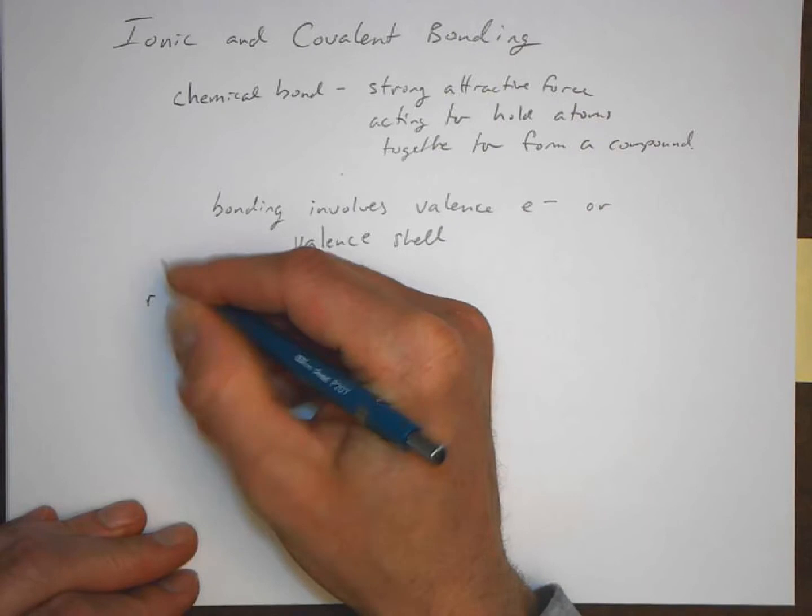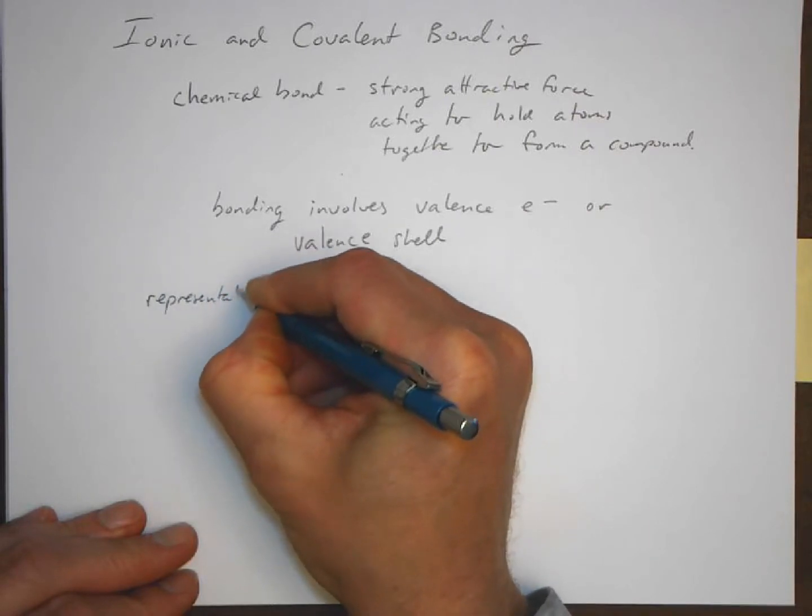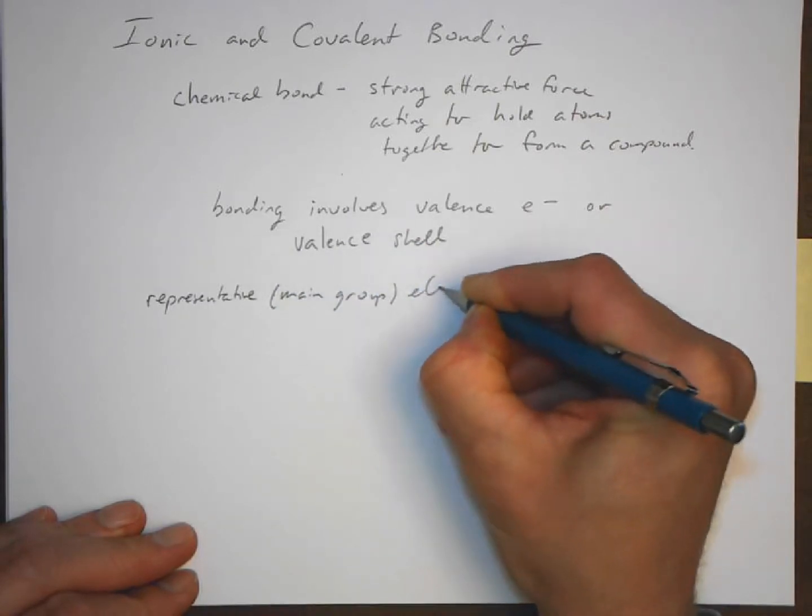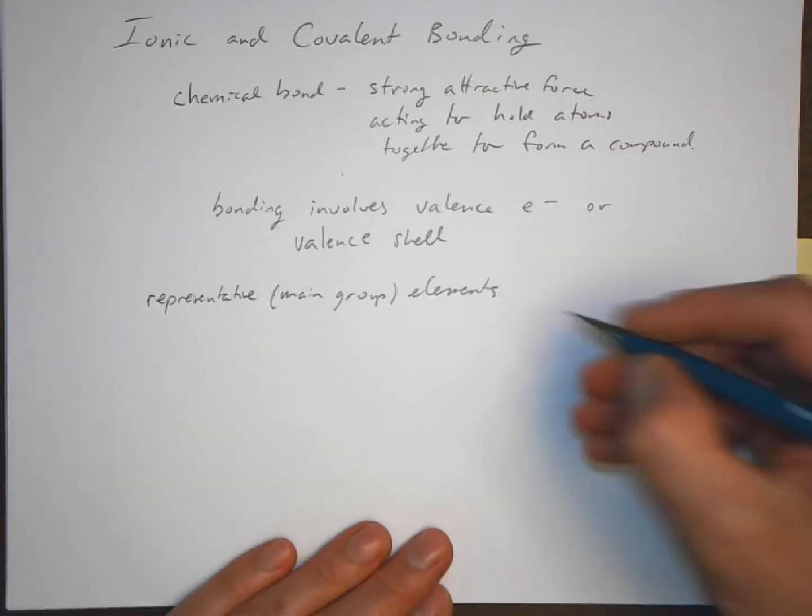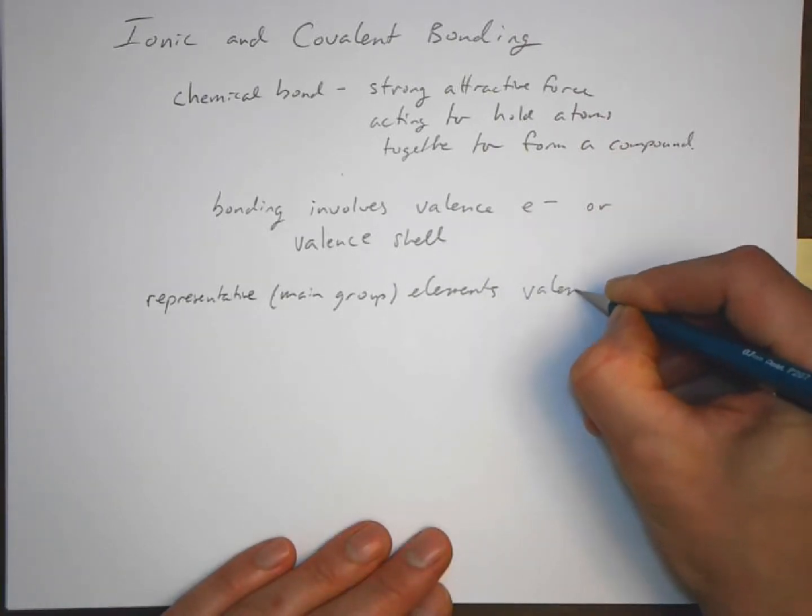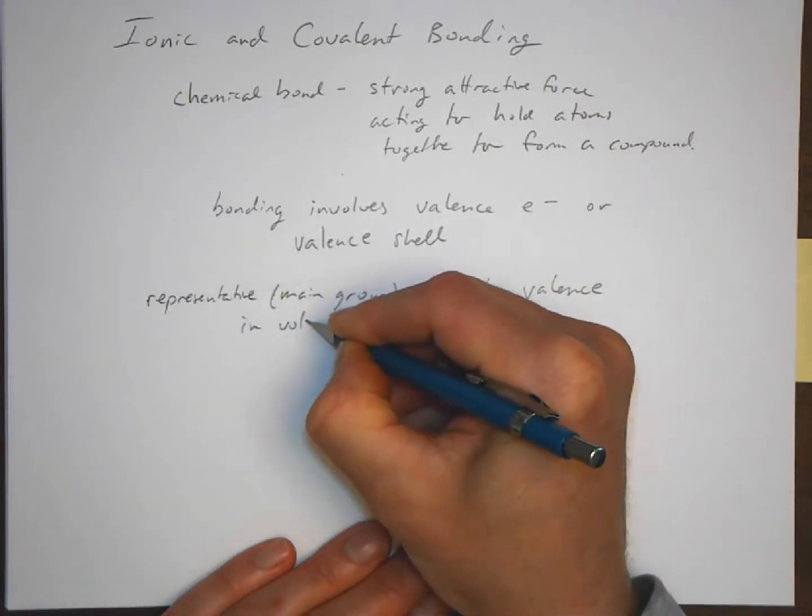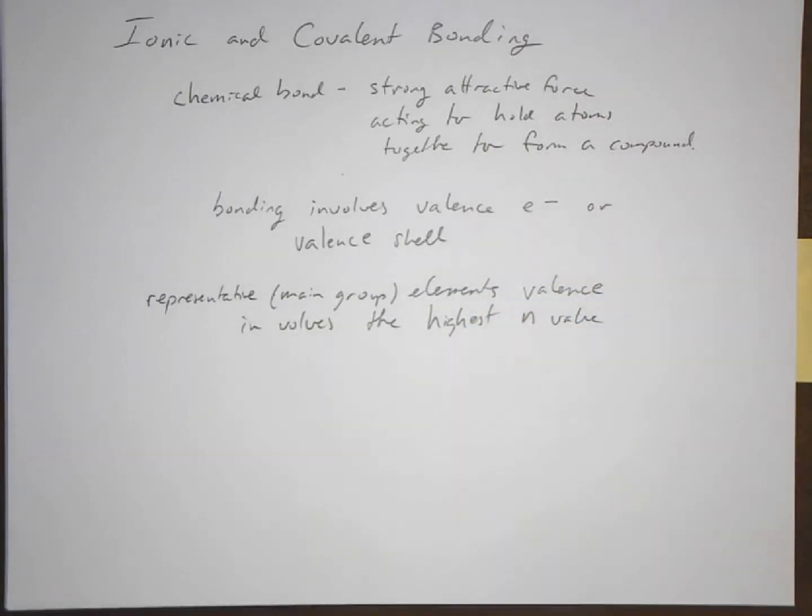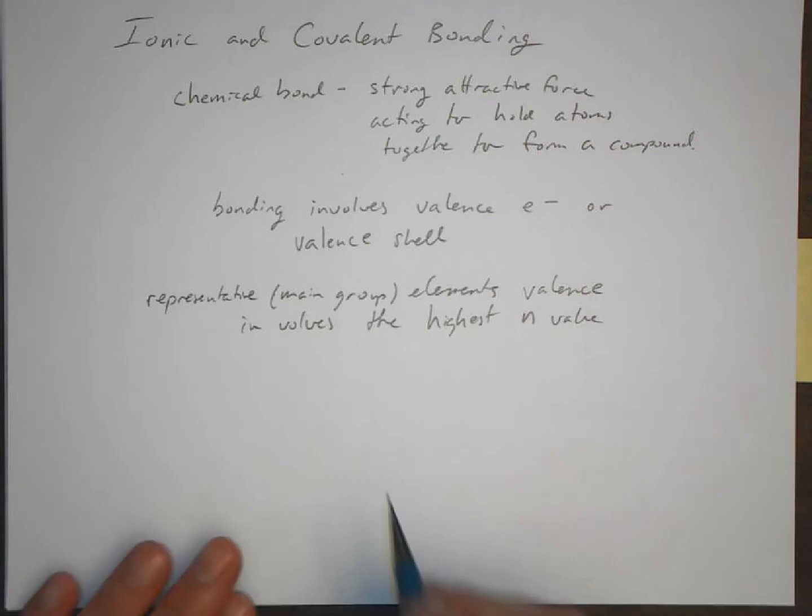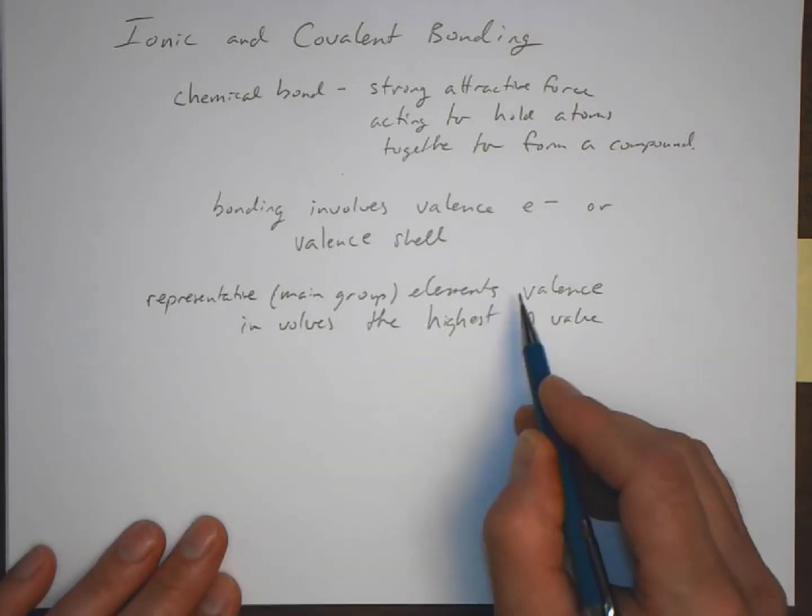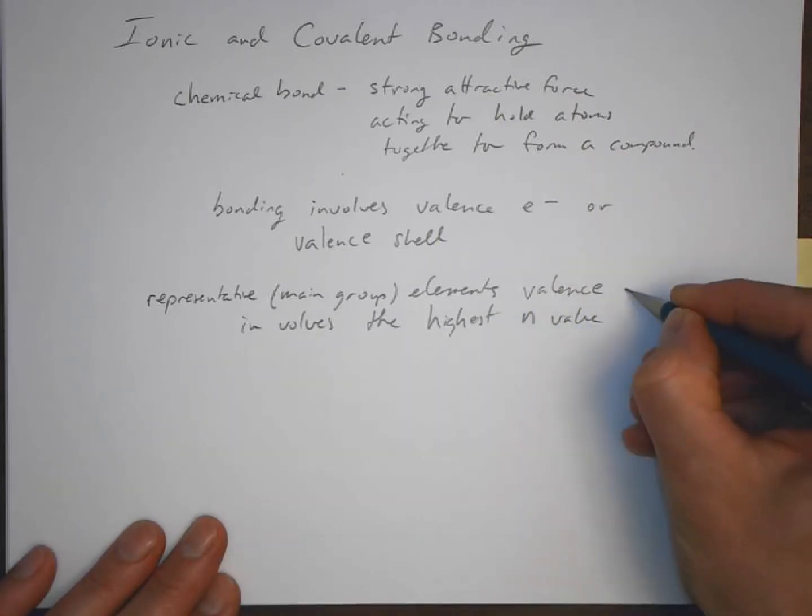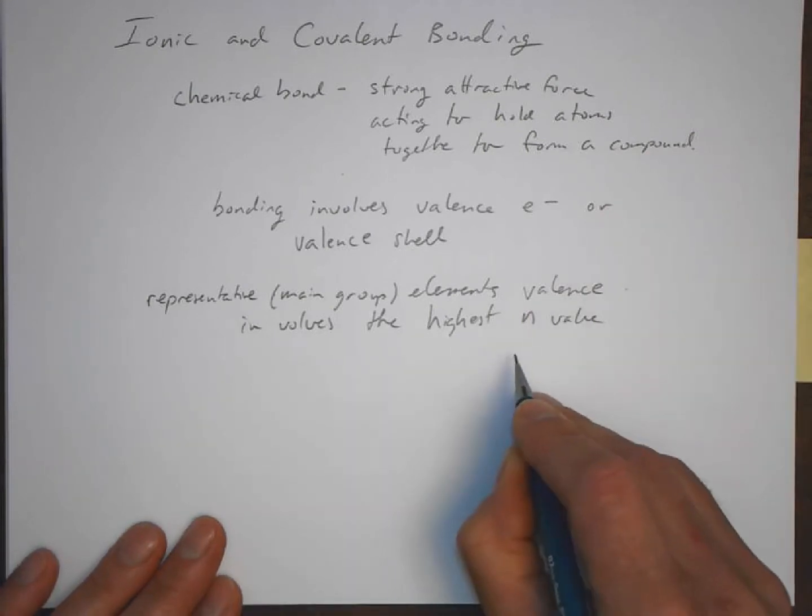For the representative elements, or the main group elements, the valence shell, as you remember, involves the highest n value. For those, the valence electrons involve the highest n value.